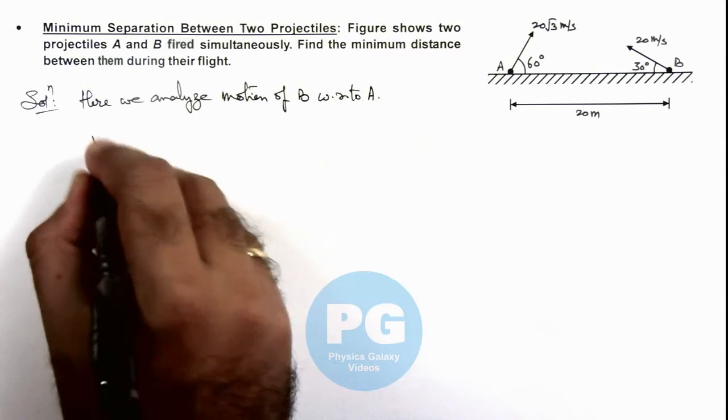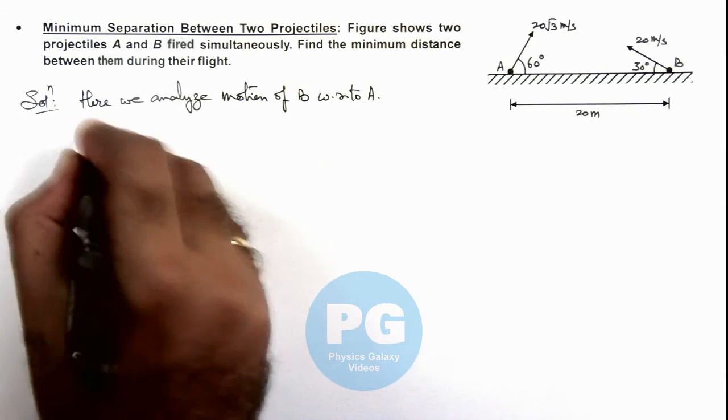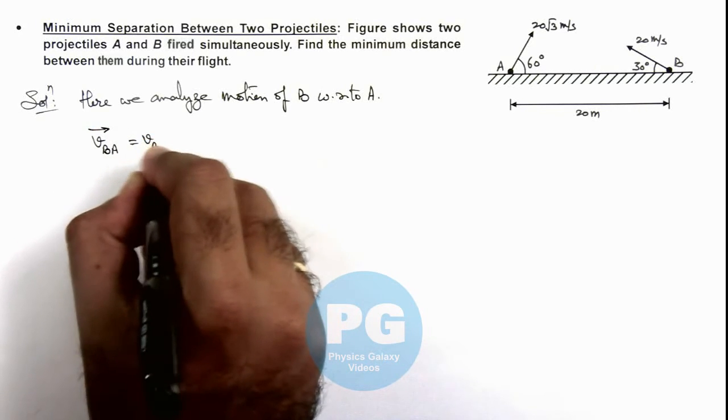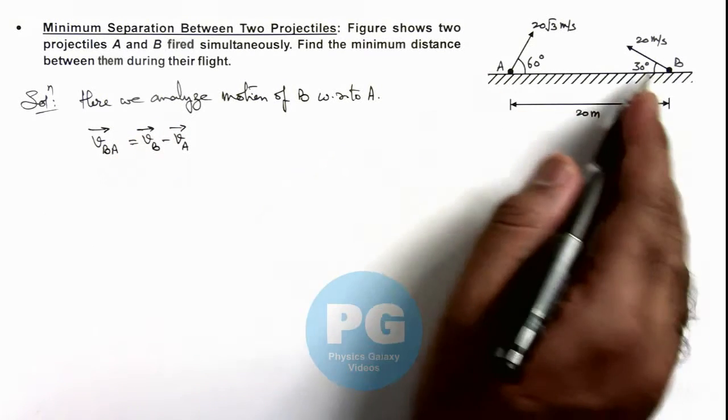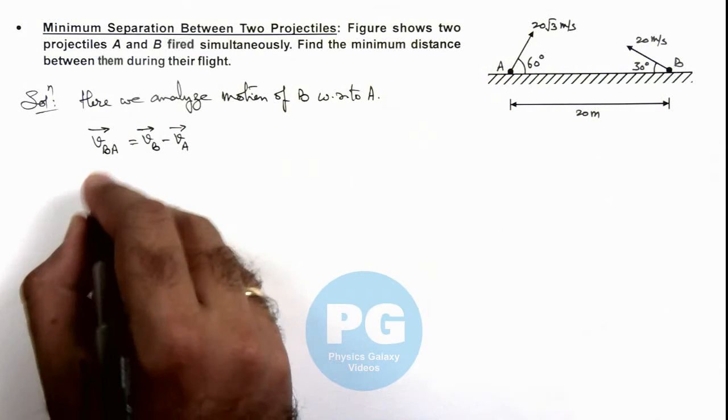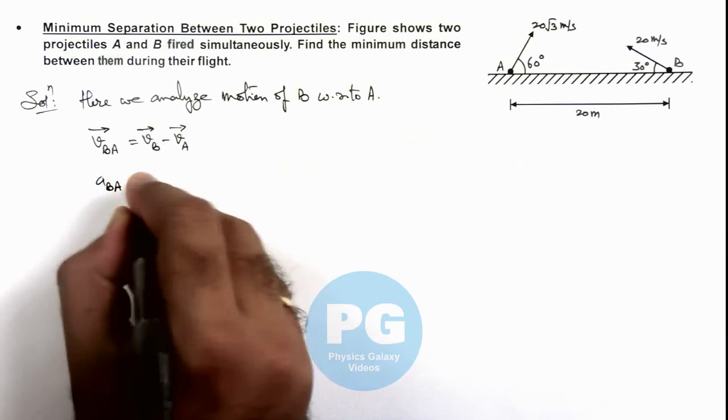The velocity of B with respect to A can be given as v_B minus v_A. As both particles are moving under gravity, the acceleration of B with respect to A can be taken as zero.